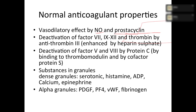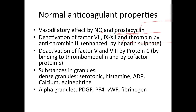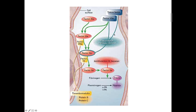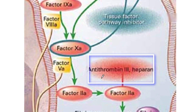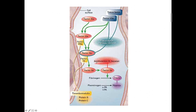Prostacycline also inhibits platelet aggregation. Now let's talk about factors produced by the liver and the substances that inhibit them. In your endothelium there is continuous production of heparin sulfate. On this heparin sulfate you will find a protein called antithrombin 3. The function of antithrombin 3 is to continuously cleave factors produced by the liver — these include factor 2 (thrombin), factor 7, 9, 10, 11, and 12.